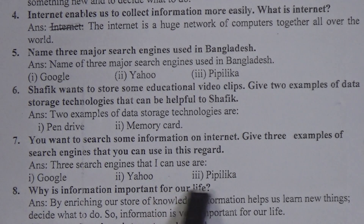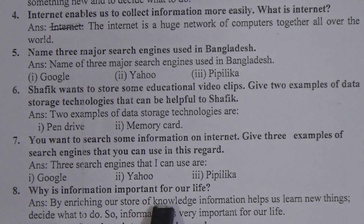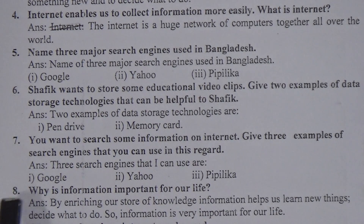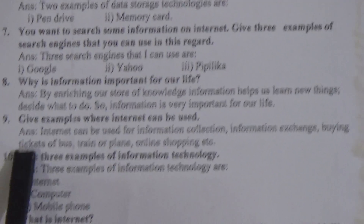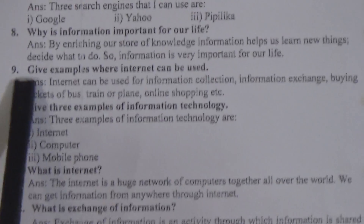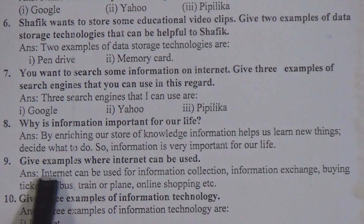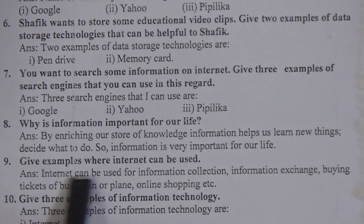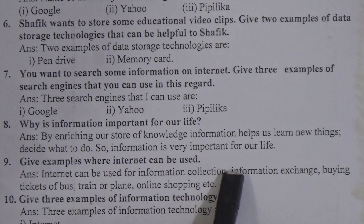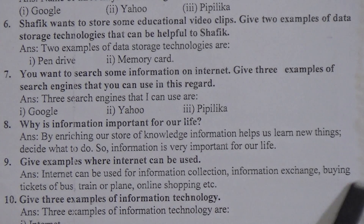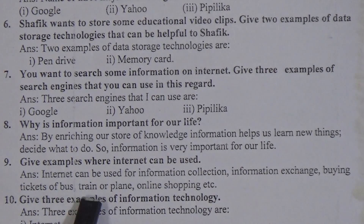Why is information important for our life? The answer is: by enriching our store of knowledge, information helps us learn new things and decide what to do, so information is very important for our life. Question number nine: give examples of where the internet can be used.